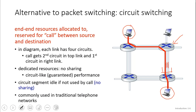Each link has four circuits — one, two, three, four. What you're seeing on the image is basically a computer takes some data and uses the second link here, and when it gets to the next switch it uses the first link, so the data goes there.